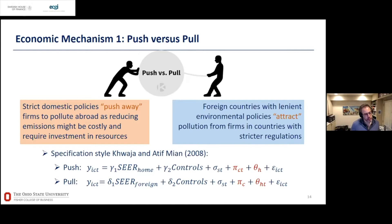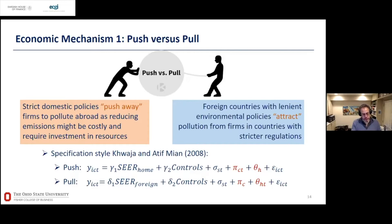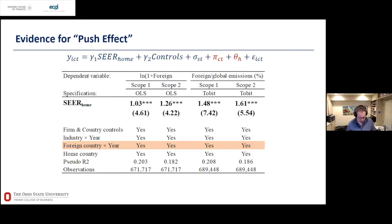To address this, we use the Khwaja and Mian (2008) framework. Because we have this firm-country-year data structure, we can control for — hold constant — the policies of my home country per year and ask whether variation in foreign countries' policies matters for firms headquartered there, and vice versa.